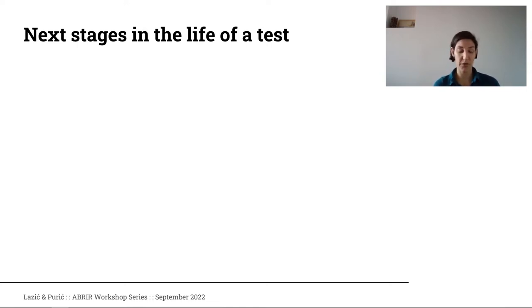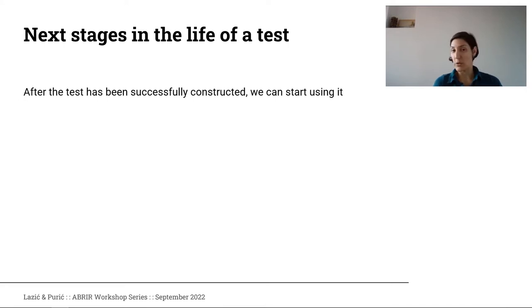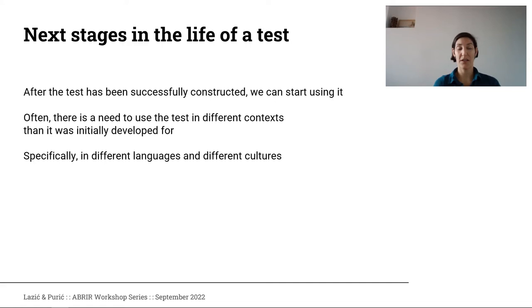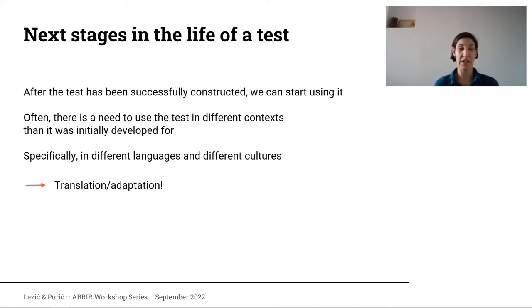We've just gone through these stages of test construction briefly because what we're more interested in is what happens next. We've created a test and demonstrated it has good metric properties. So we can start using it — and often there's a need to use the test in different contexts than those where it was developed, specifically in different languages or in different cultures. That is where we come to the topic of translation and/or adaptation.